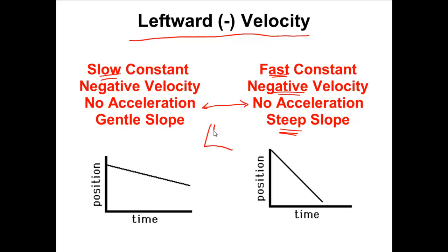There is no acceleration going on here because in order to see acceleration on a PT graph, I would have had to see a line like this, curved, doing that. These are straight lines. Straight lines means constant velocity.